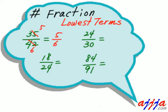What about this one? Same thing — thirty minus twenty-four is six. Six goes here four times, and thirty divided by six is five times. That's it.